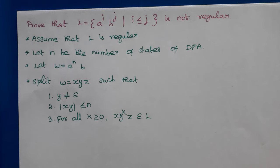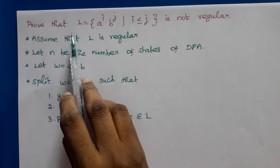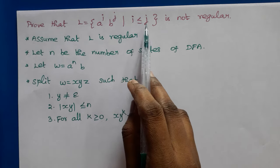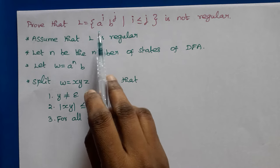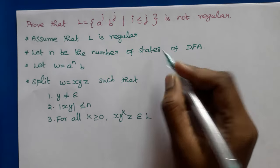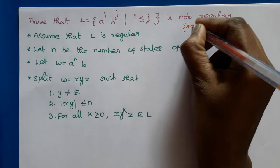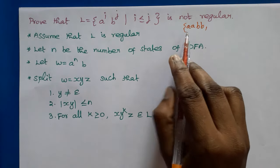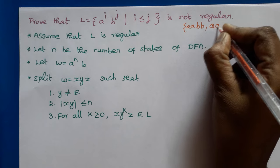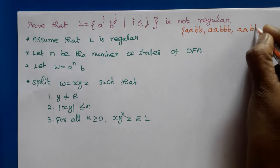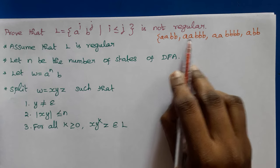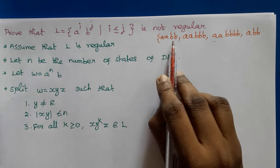Hello all. In this lecture we are going to discuss an example for the Pumping Lemma. We need to prove that the language L = {a^i b^j | i ≤ j} is not regular. This language accepts all strings in which the number of A's must be less than or equal to the number of B's — for example, 'aabb', 'aabbb', 'aabbbb', or 'abbb'.